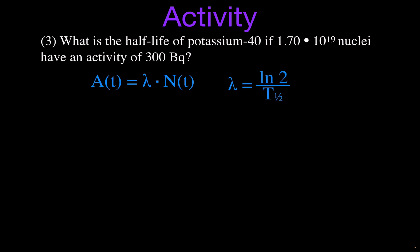Problem number 3: this time we want to figure out the half-life of potassium-40. We have 1.70 times 10 to the 19th nuclei of potassium-40, which is radioactive, and that number of radioactive nuclei has a corresponding activity of 300 Becquerels. So in this case we know the activity AT and the corresponding number of radioactive nuclei NT, and we need to figure out the half-life.